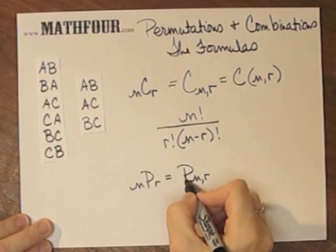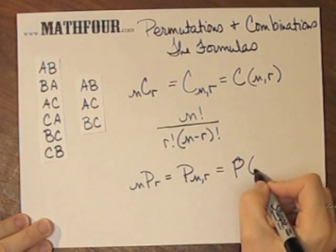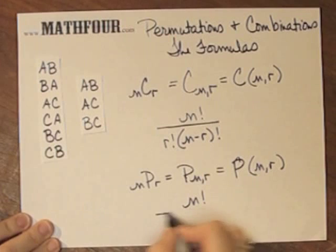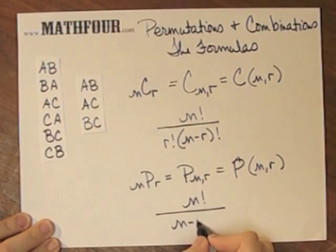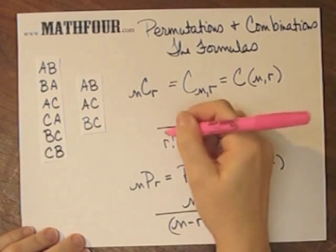These are little subscripts here, letters aren't quite big enough to see that. Which is n factorial over n minus r factorial, without the r. So this is the difference between them.